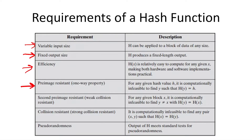The fourth requirement is that the hash function should be a one-way function, meaning it should be easy to compute the hash value H of an input Y, but given the hash value H, it should be computationally hard or infeasible to find the corresponding input Y. A hash function that satisfies this requirement is also known as pre-image resistant. Then there are requirements regarding collision resistance: weak collision resistance and strong collision resistance. A hash function is weakly collision resistant if for any given input X, it is computationally infeasible to find another input Y whose hash value equals the hash value of X. Weak collision resistance is also referred to as second pre-image resistance.